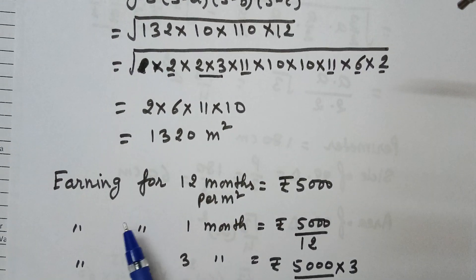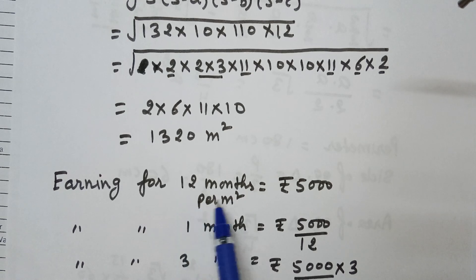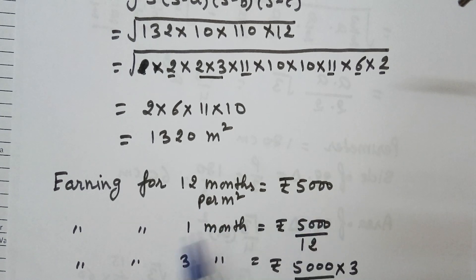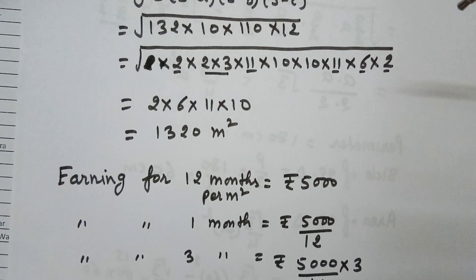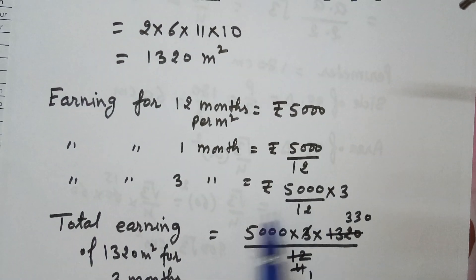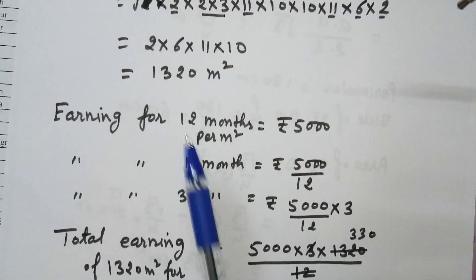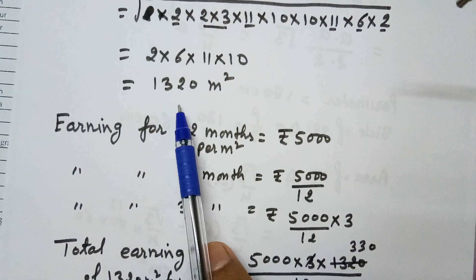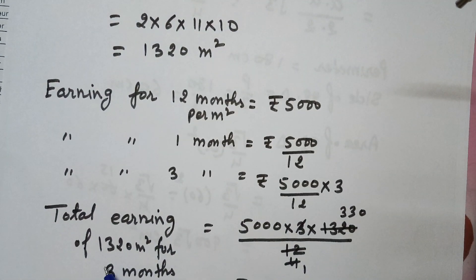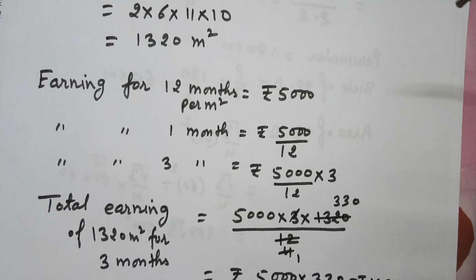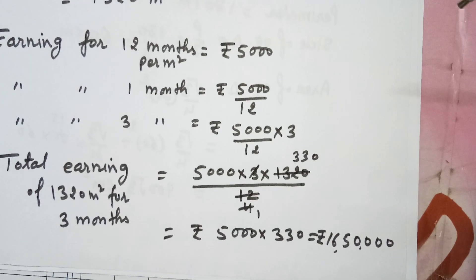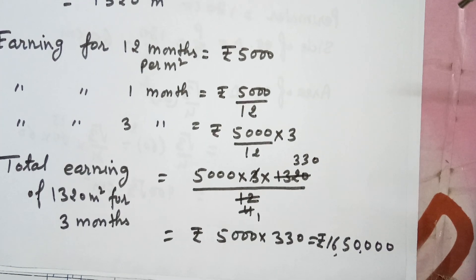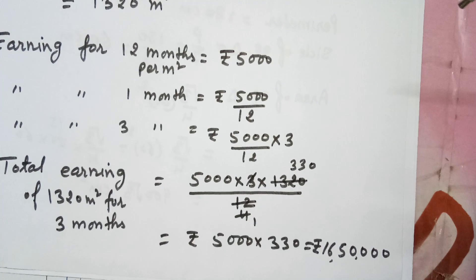The earning for 12 months per square meter is ₹5,000, so for 1 month it's ₹5,000 / 12. For 3 months, multiply by 3. Since we have total area of 1,320 square meters, the total earning is 1,320 × (5,000 × 3) / 12 = ₹16,50,000. This is the total earning for the advertisement for 3 months.